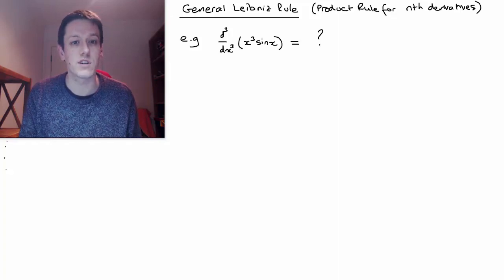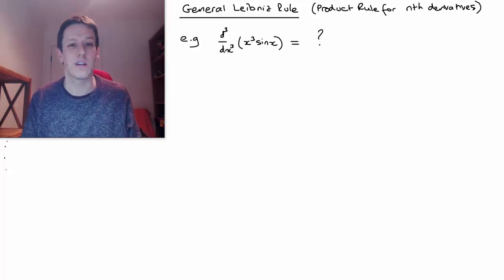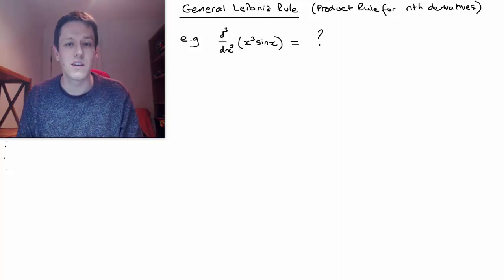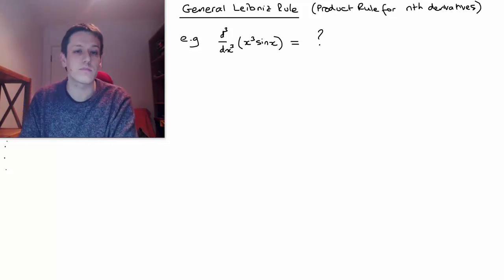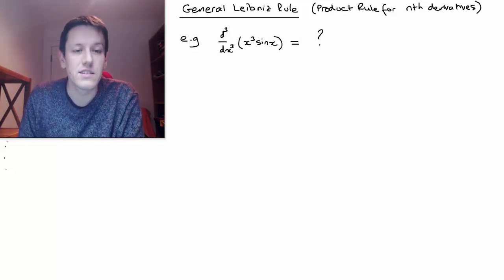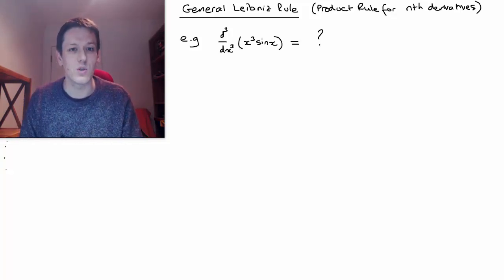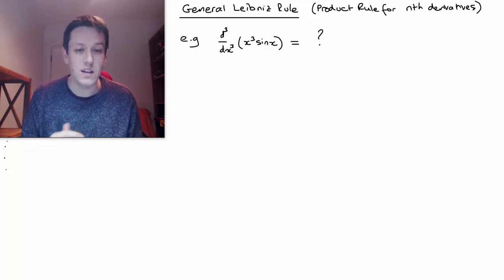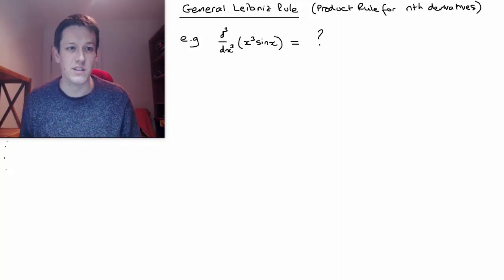For example, the third derivative of x cubed times sine x — what is that? Of course you could just apply the product rule three times, but as a good mathematician you might think: is there a way I can write down something in general for nth derivatives? The result is actually quite neat. I'm going to show you fairly informally where the result comes from, then write it down formally, do this example, and then give a formal proof towards the end of the video.